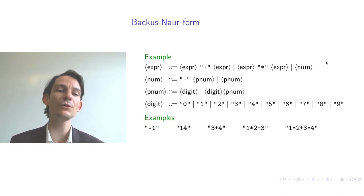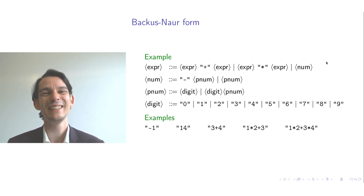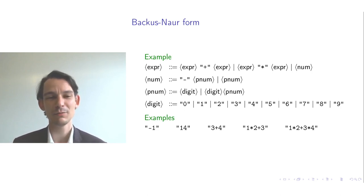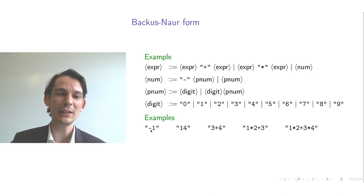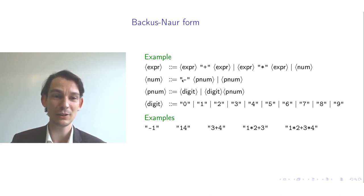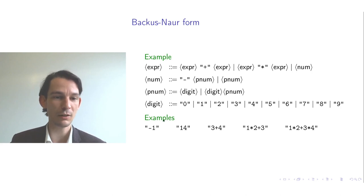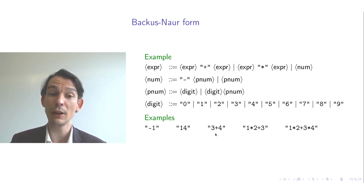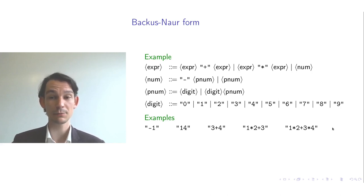Examples of strings generated by this grammar include 'minus one'. We choose the NUM alternative for expression, then the minus PNUM alternative for number, so the minus is that literal minus. Then PNUM becomes a digit, and choosing one gives us minus one. Similarly, derivations can be found for multi-digit numbers.